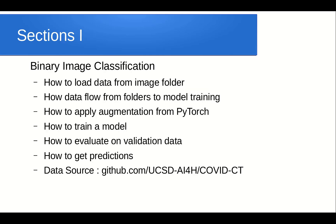The first section covers binary image classification. We will learn how to load data from an image folder — for example, when you have train and validation folders each containing two classes. We will cover how data flows from the folder to model training, how to apply augmentation to the data, how to train and evaluate a model, and how to get predictions.